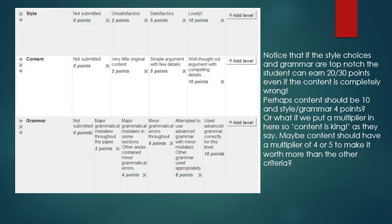Perhaps content should be worth 10 points and style and grammar maybe 4? Or what if we put a multiplier in here so content is king, as they say? Maybe content should have a multiplier of 4 or 5 to make it worth more than the other criteria.